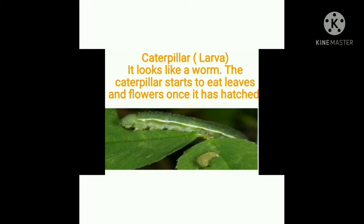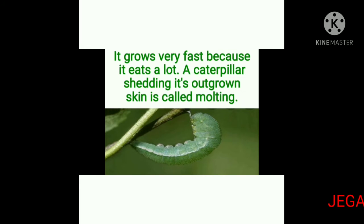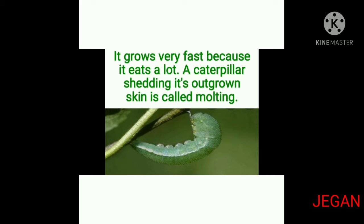Once it has hatched, the caterpillar starts to eat leaves and flowers. It grows very fast because it eats a lot. A caterpillar shedding its outgrown skin is called molting.